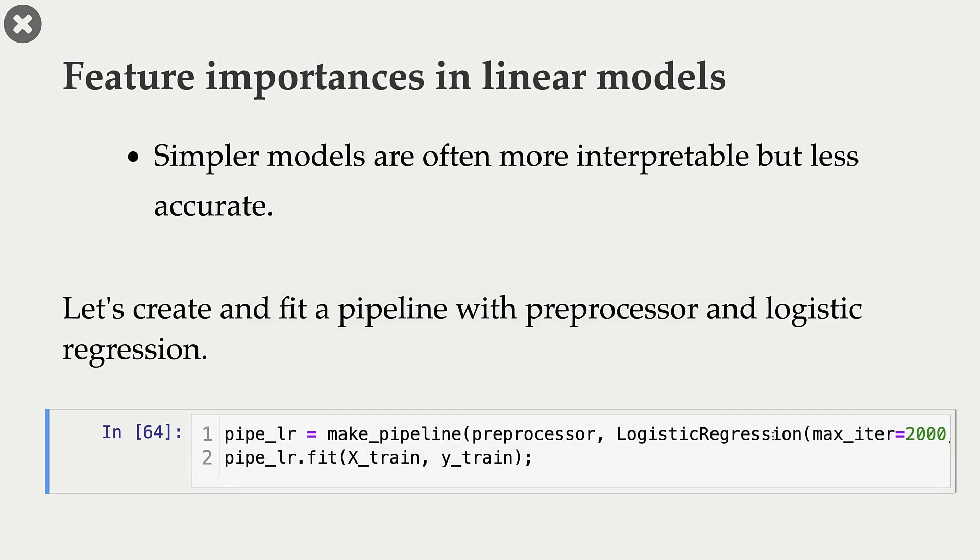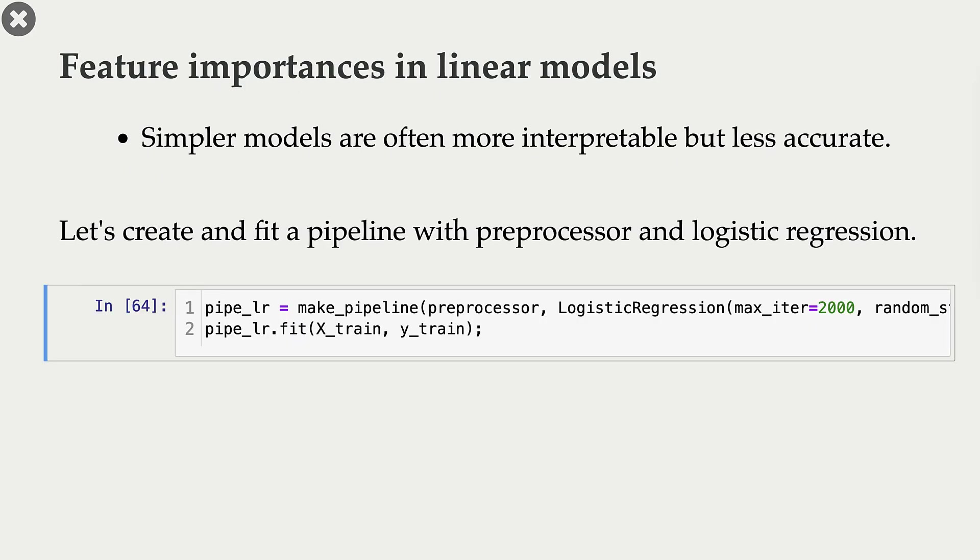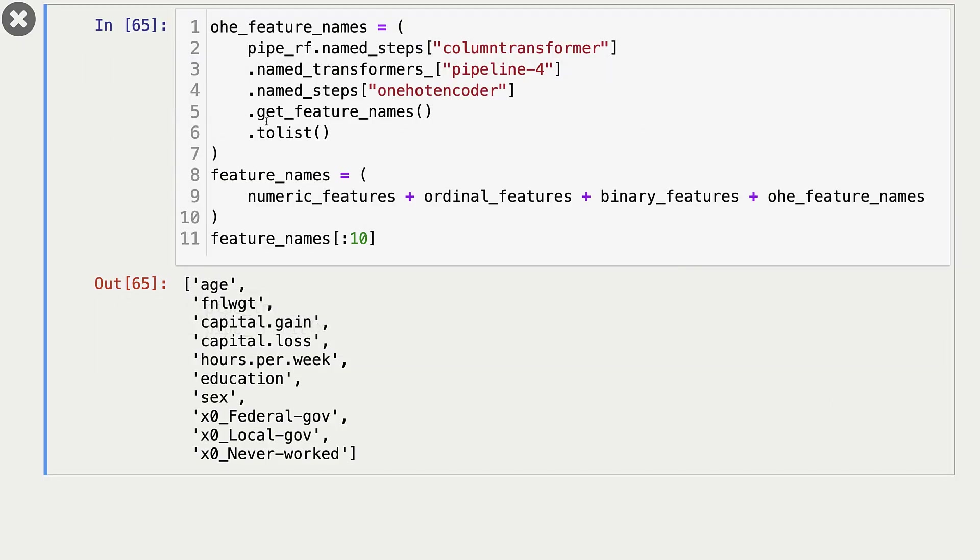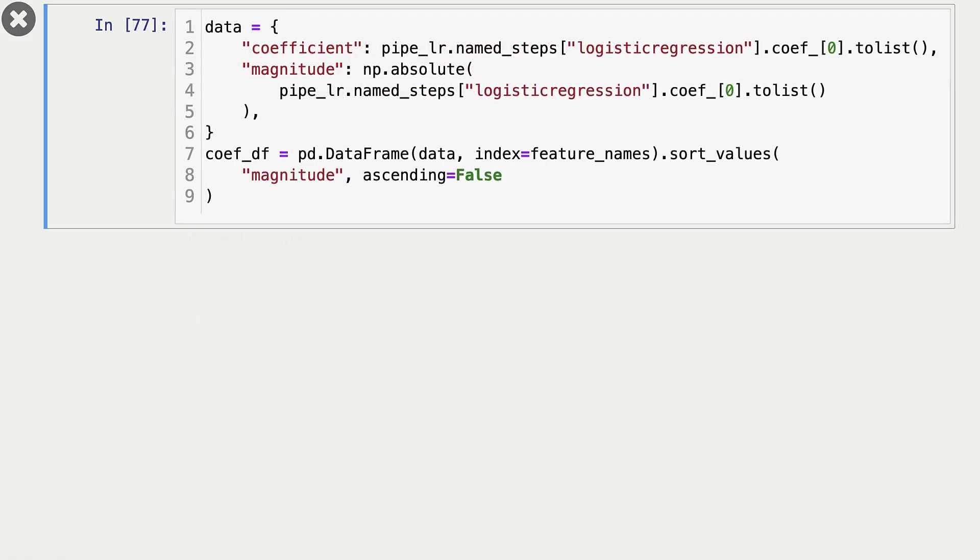Let's look at feature importances in linear models. We already have seen this before. So I'm creating a logistic regression pipeline here, I'm fitting my pipeline. And as usual, I'm taking feature names for one-hot encoded features, and this is a list of all my features: numeric features, ordinal features, binary features, and one-hot encoded features. And these are the first 10 features from our list of feature names.